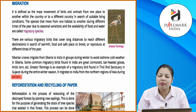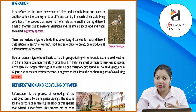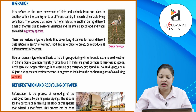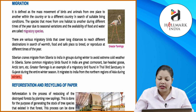Siberian cranes migrate from Siberia to India during winter as weather conditions are different there. India also has migratory birds like the great cormorant, bar-headed goose, and Arctic tern. The greater flamingo is a migratory bird that migrates to India from the northern regions of Asia during winters.